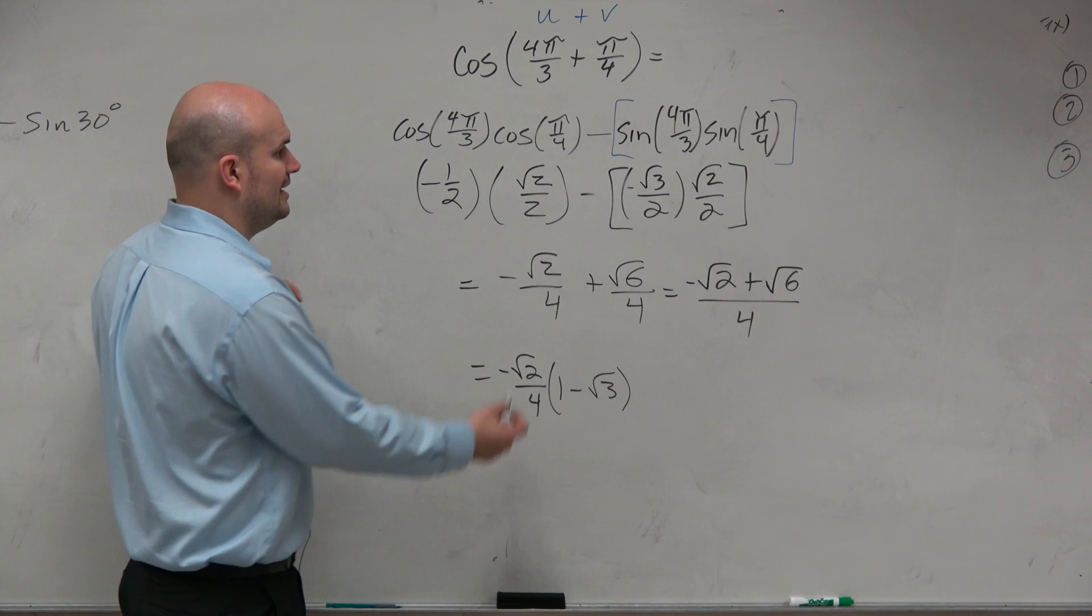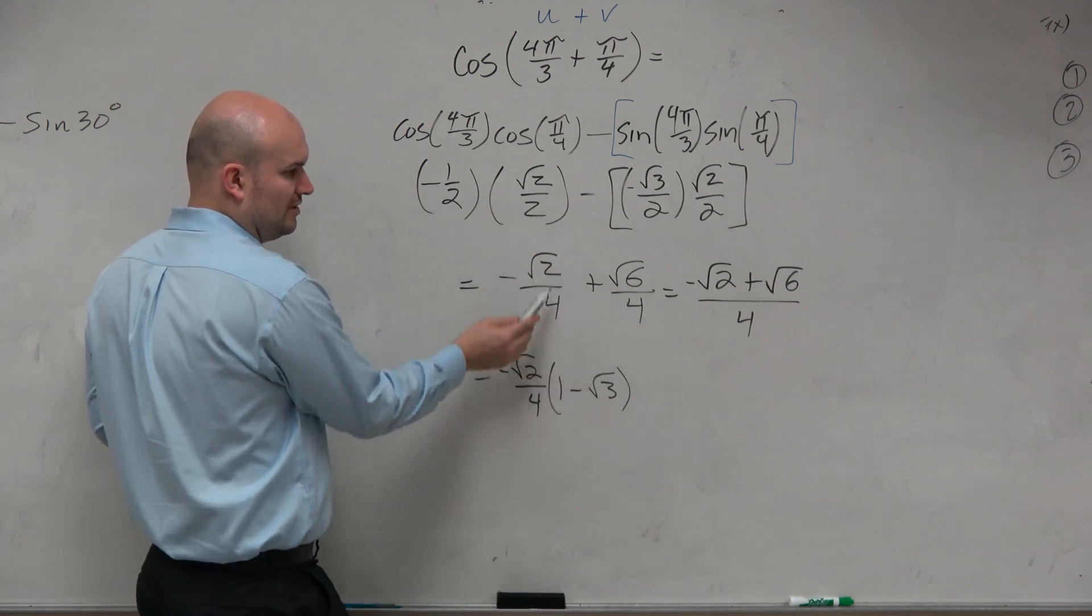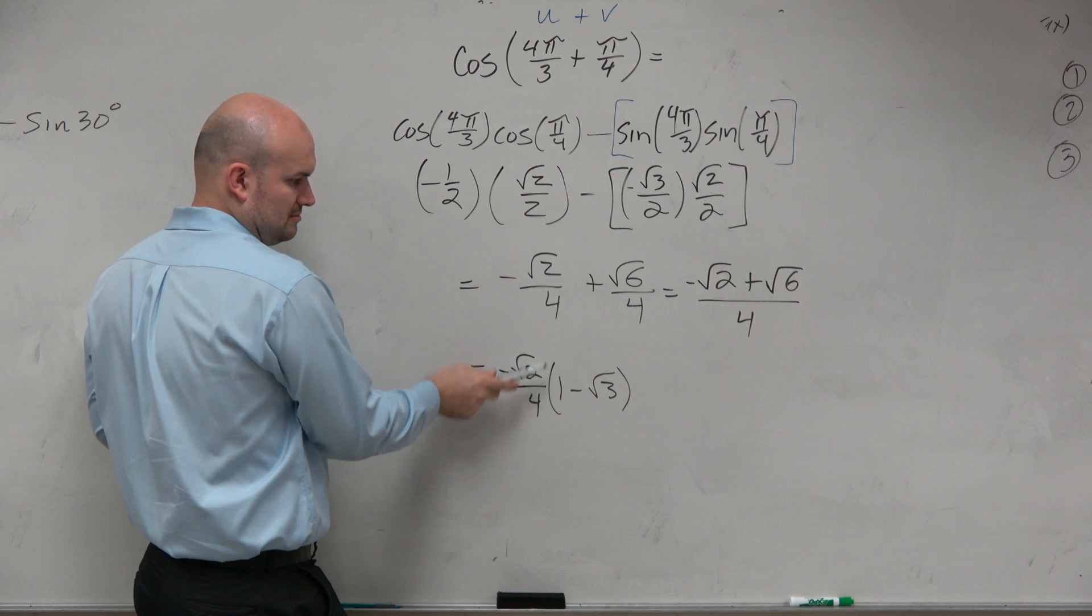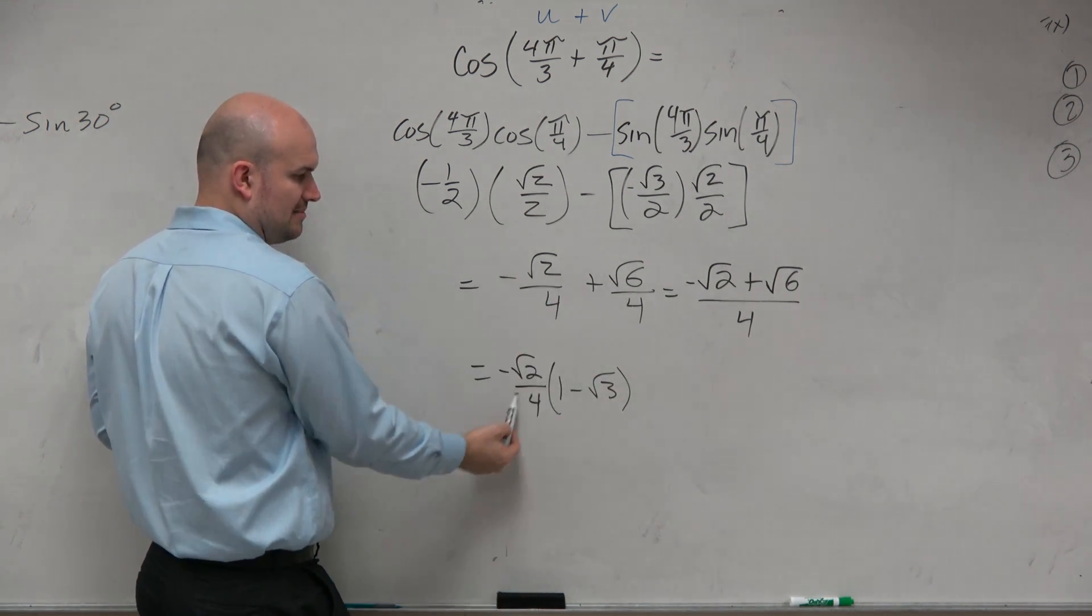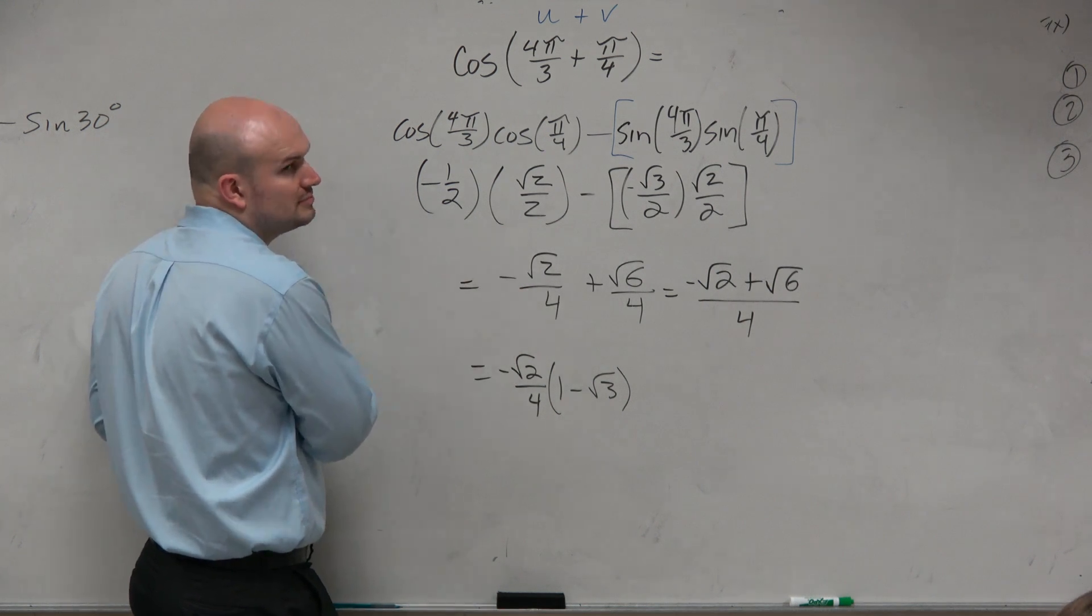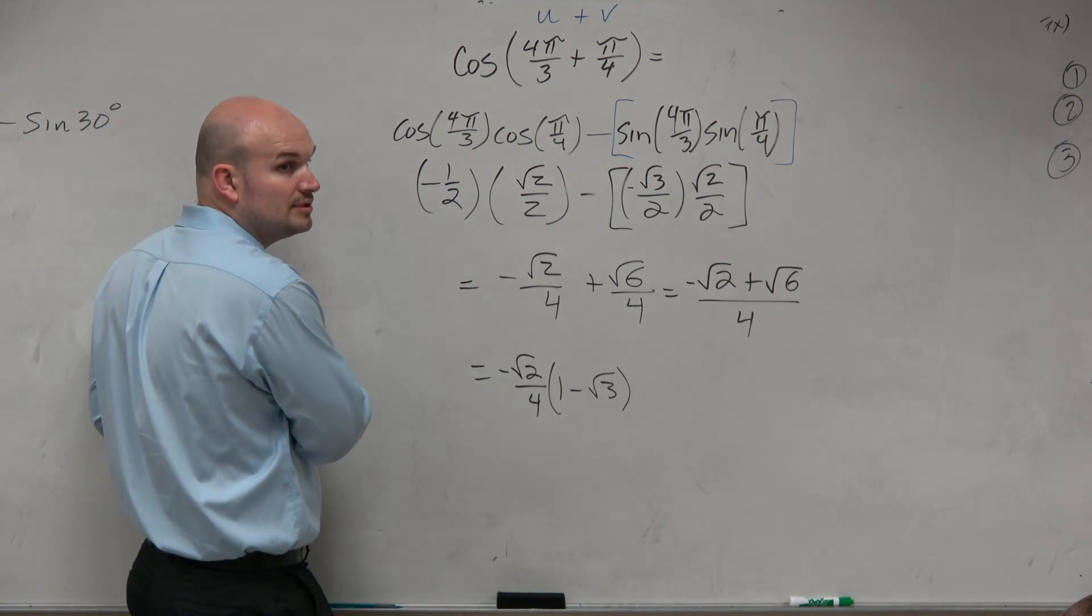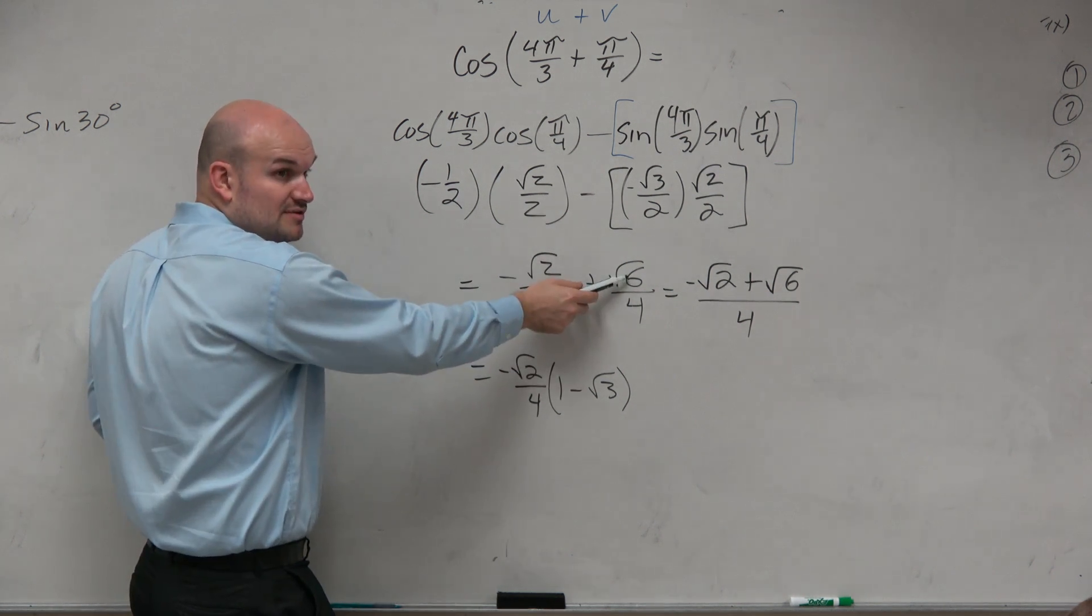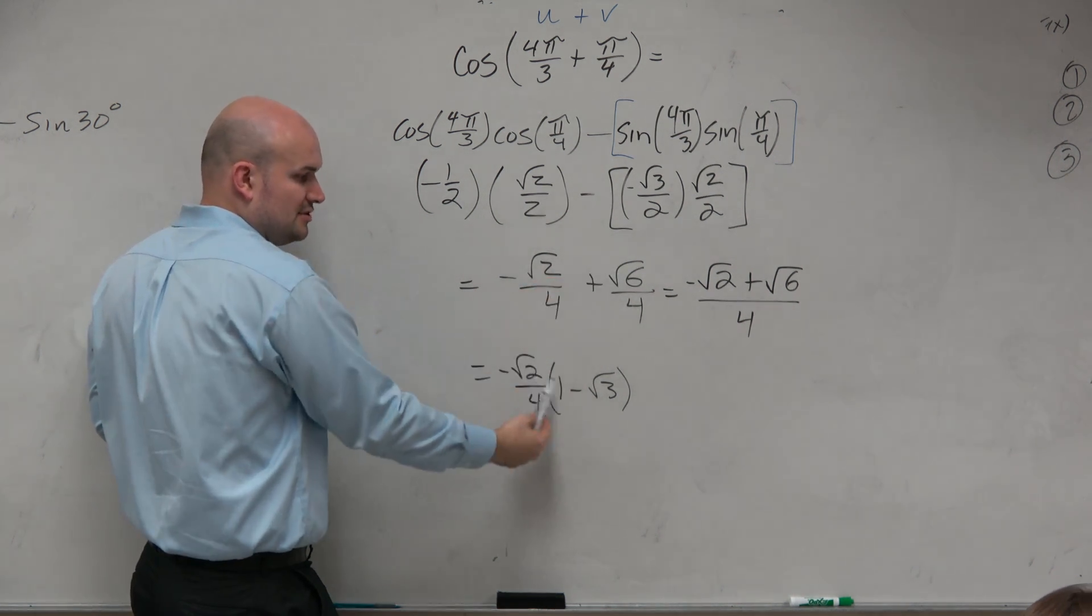So another way is think about what do these have in common? They both have a square root. They both have a 4 in common, right? So you can factor out a 4 in the denominator. And they both have a square root of 2. Doesn't square root of 2 both divide into square root of 2 here and square root of 6? Yes, right? So you could divide that out.